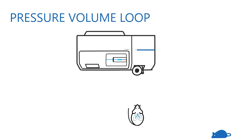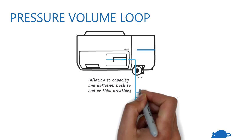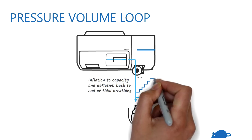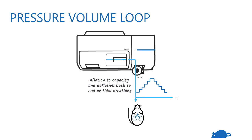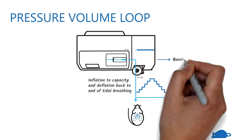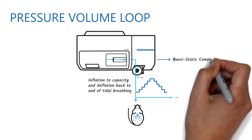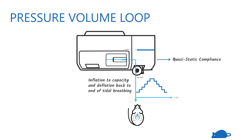In the pressure-volume measurement, the lungs are inflated to total lung capacity and then deflated in a stepwise manner. The flexi-vent measures the quasi-static compliance of the lung across the entire inspiratory capacity.